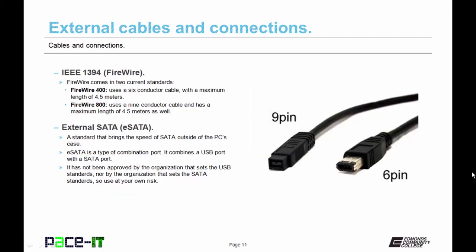Let's move on to the IEEE 1394 cable and connections. This is FireWire. Now FireWire comes in two current standards. There's FireWire 400 which uses a six conductor cable with a maximum length of 4.5 meters. Then there's FireWire 800. It uses a nine conductor cable and has a maximum length of 4.5 meters as well.